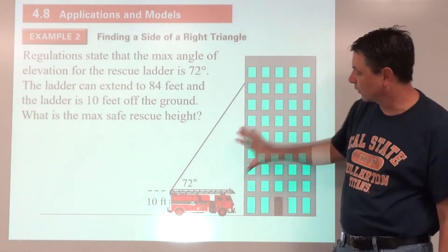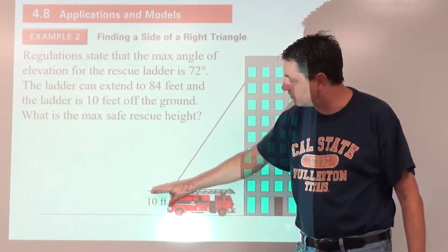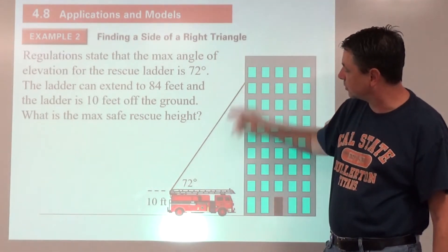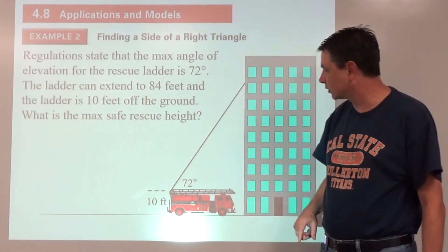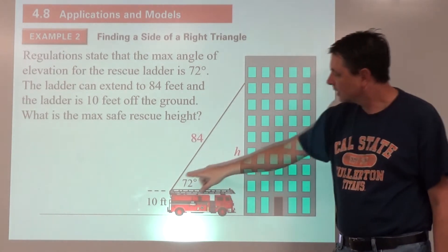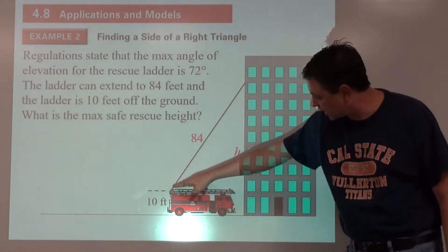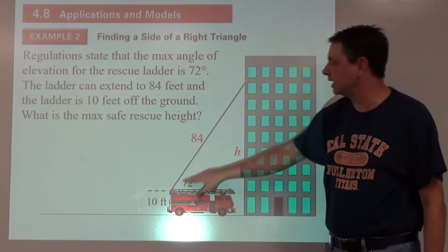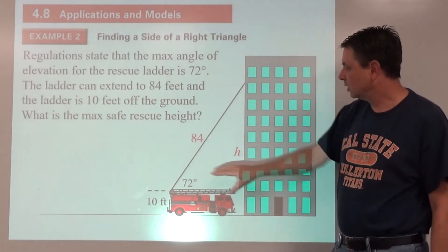We got a building, we got a fire truck. The ladder is 10 feet off the ground, it extends up here at an angle of elevation of 72 degrees at a length of 84 feet, and an unknown height here. We're talking about this being our triangle.